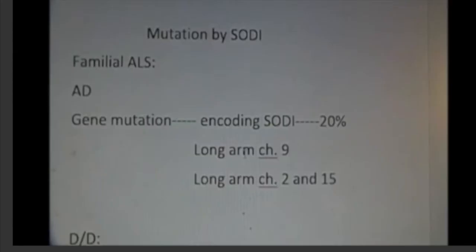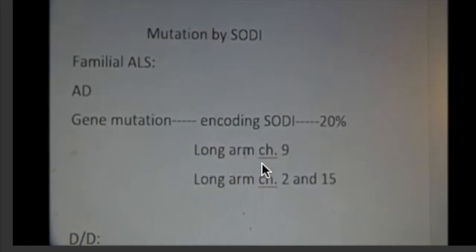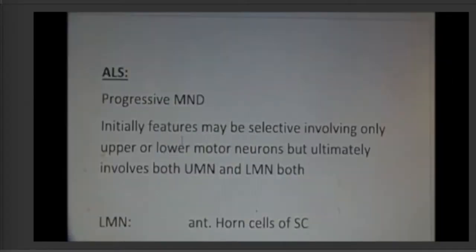The mutation in superoxide dismutase 1 is autosomal dominant and occurs in 20% of cases. The familial form of the disease is due to a mutation on chromosome 21. There are also abnormalities on chromosomes 2, 9, and 15. ALS is a degenerative motor neuron disease.